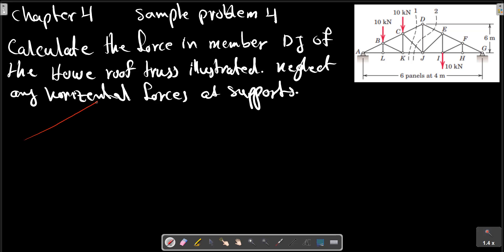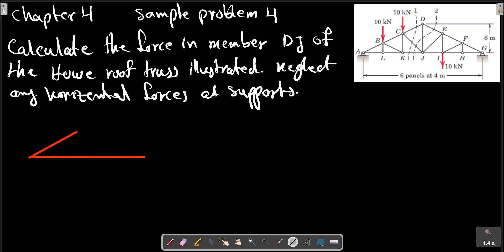Consider this picture. Let me write it here. At this point and for this point we have forces — let me write with yellow. Point A and point G.